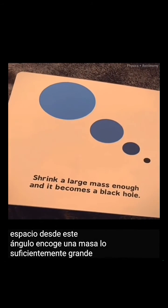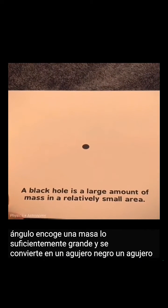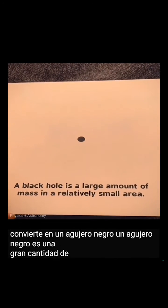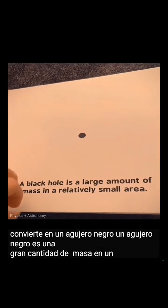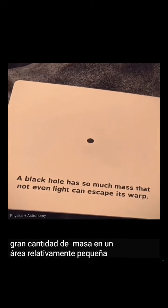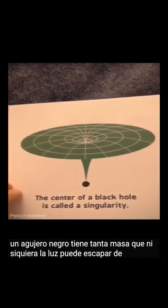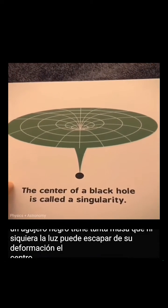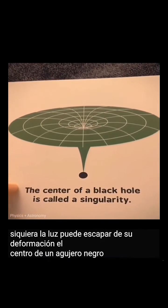Shrink a large mass enough and it becomes a black hole. A black hole is a large amount of mass in a relatively small area. A black hole has so much mass that not even light can escape its warp. The center of a black hole is called singularity.